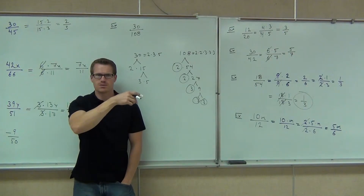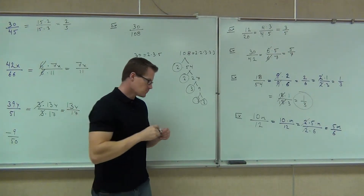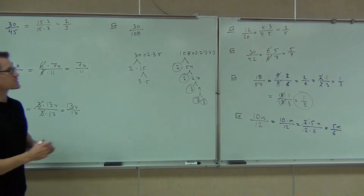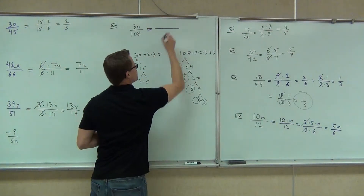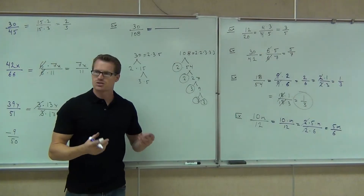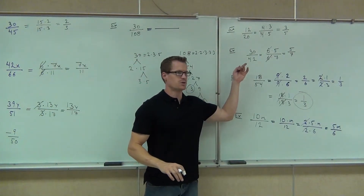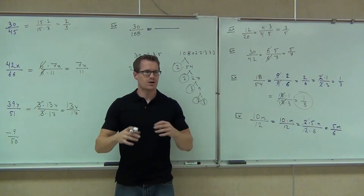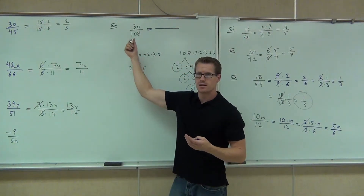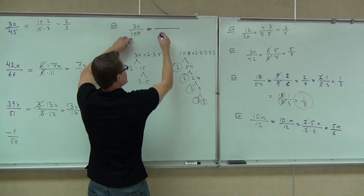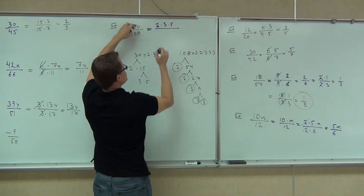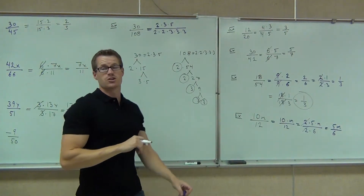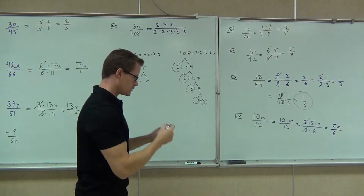Nod your head if you're still with me on this prime factorization stuff. Check out what this does for you. If you know how to prime factorize — which you know how to do, that's the number trees that we just did — watch what happens. This isn't so great for small numbers; you're never going to do this on something like 30 over 42 or 30 over 45, it takes too long. But on something where it's a large number, you might want to try this, because what this allows you to do is write out these factors: 2 times 3 times 5 over 2 times 2 times 3 times 3 times 3. Do you see any factors that are shared? Yeah. Cross them out.